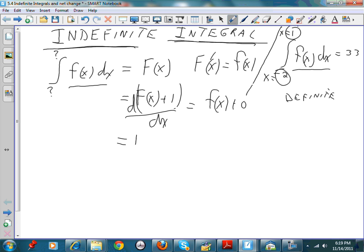What if I'd say it was f of x minus 1? That would also work, wouldn't it? If I took the derivative of the minus 1, I'd get f of x plus 0. Why is that? Because the derivative of a constant is 0.